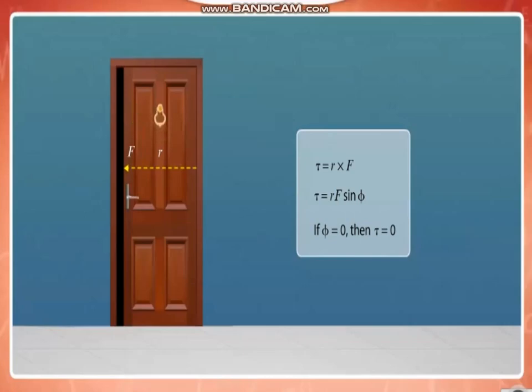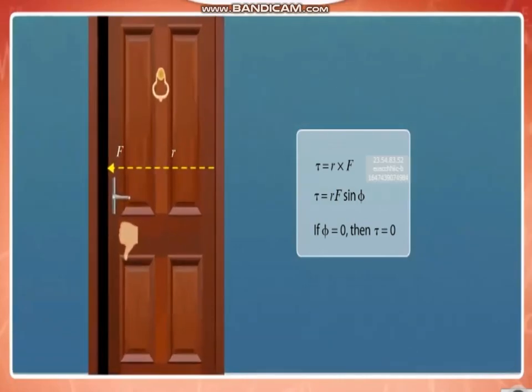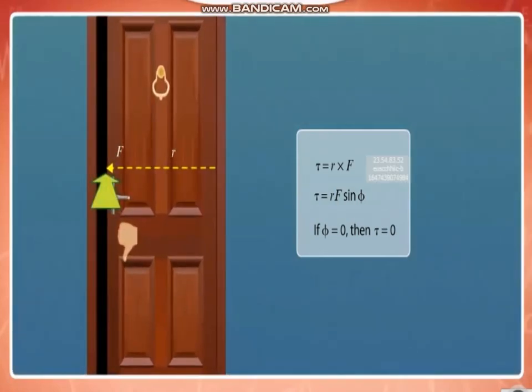The direction of torque can be obtained using the right-hand rule. If we point the fingers of the right hand along the direction of the position vector and curl the fingers towards the force vector, then the extended thumb points in the direction of torque.